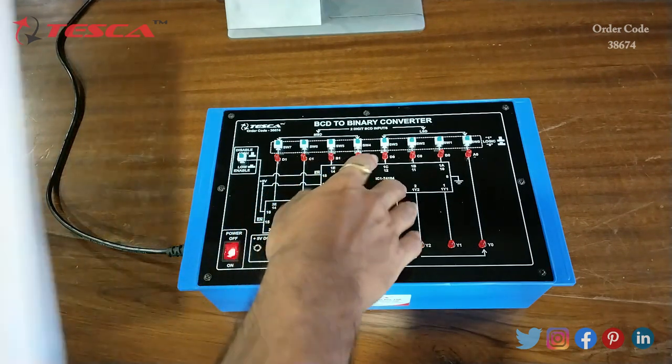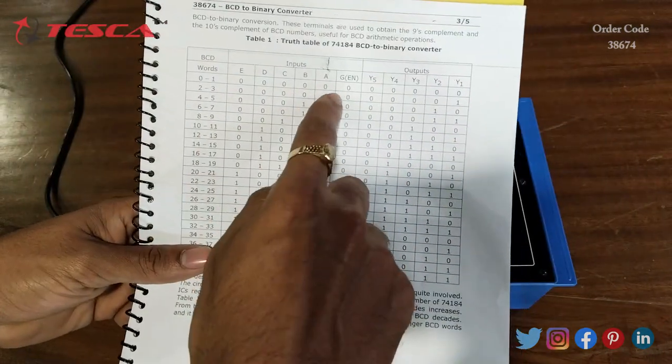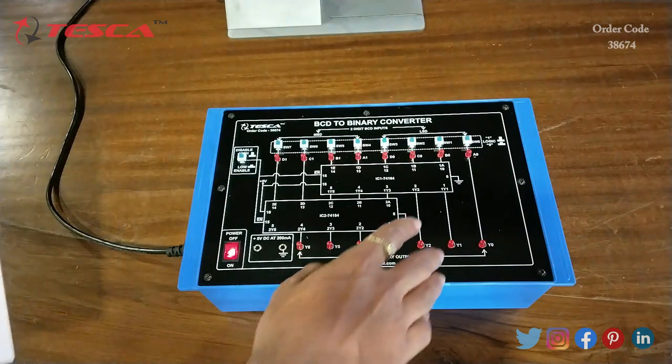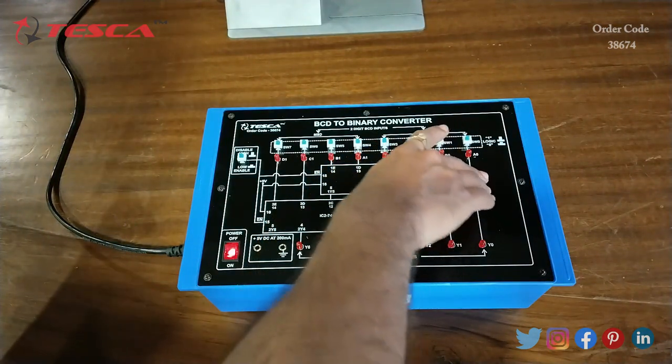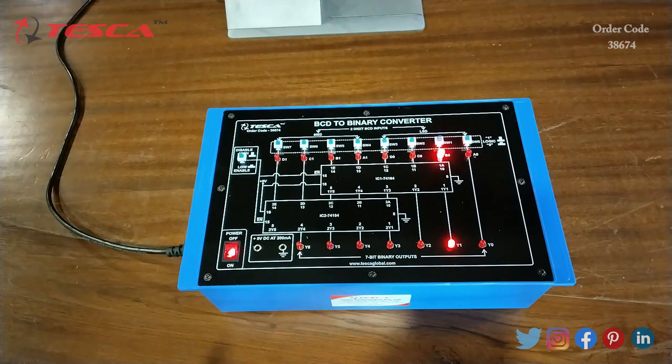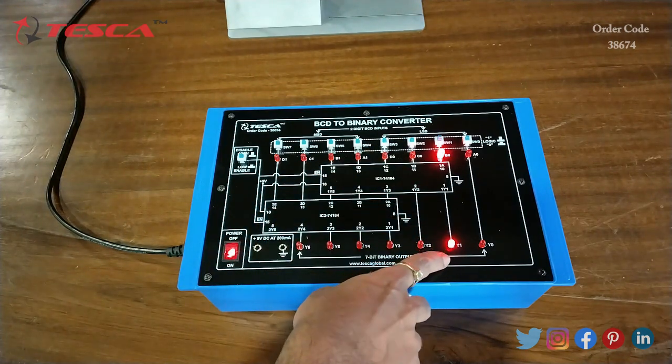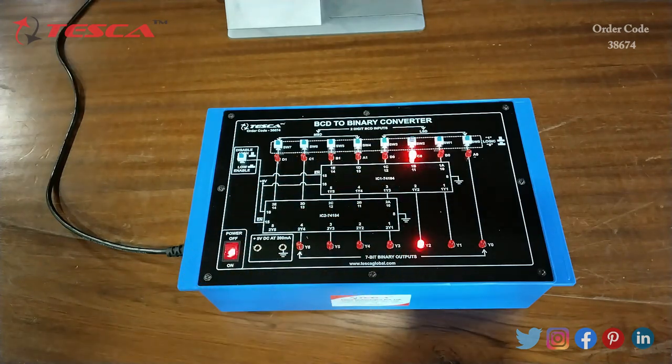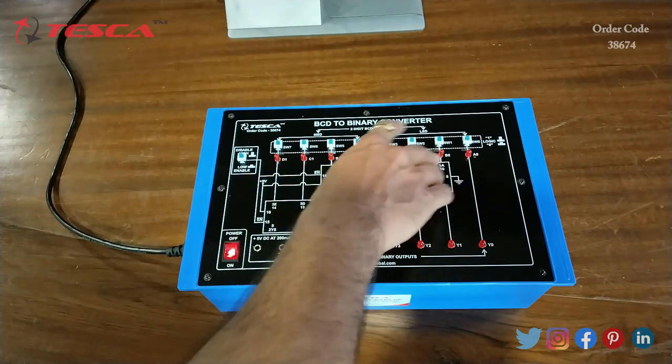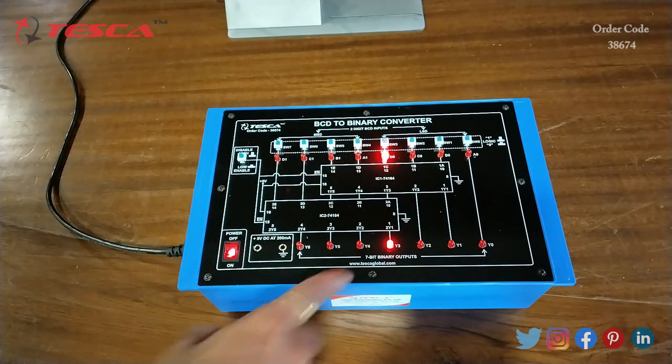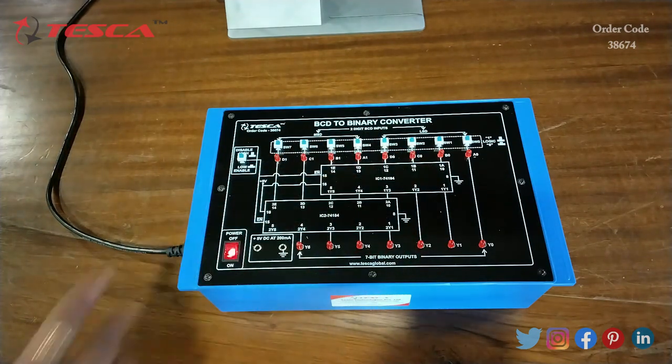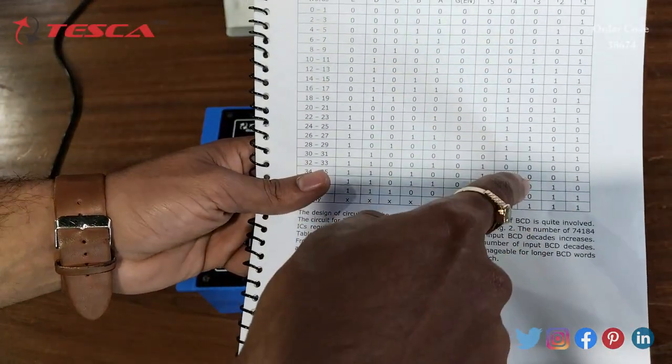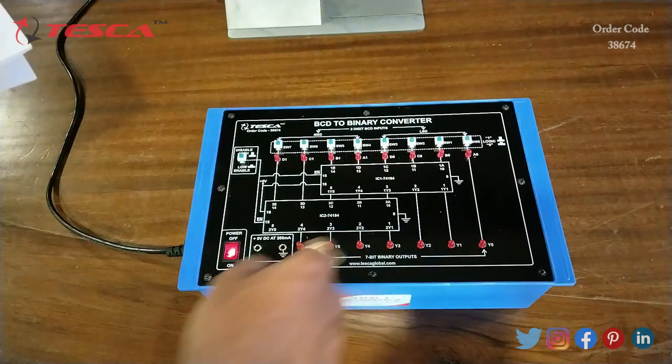The first input is 000, so at 00 position the outputs will be 00. Here you can see the outputs. Now we will give A as logic 1 and we are getting 1 at output. Now we will give 1 at B and we are getting output at B. Now we will give 1 at C and we are getting output at Y3. Similarly we can give all these inputs and get these outputs on the LED lights.